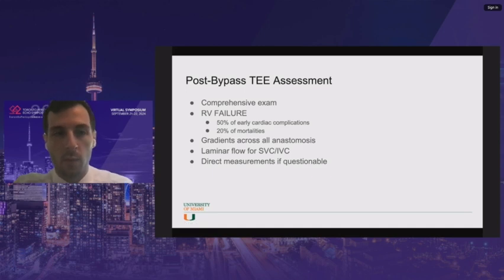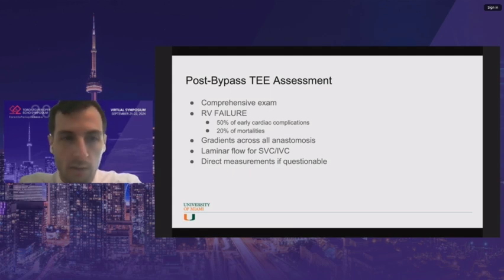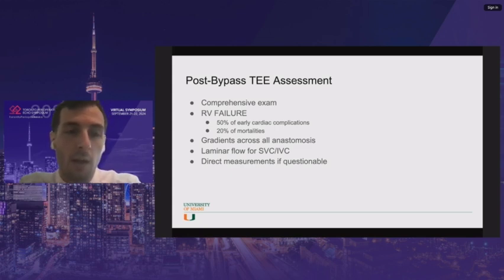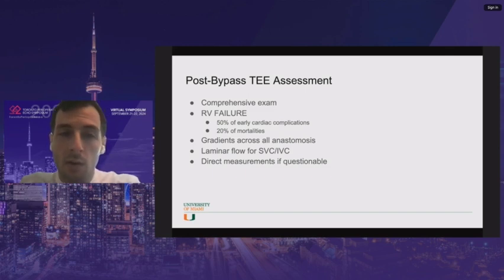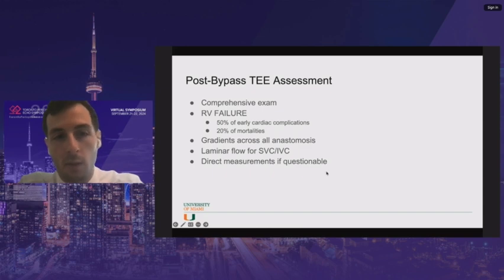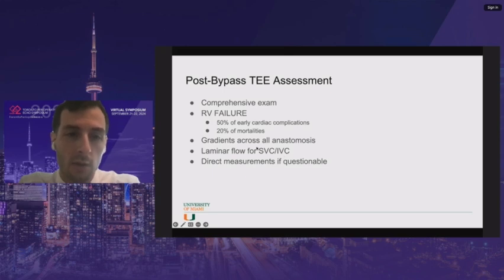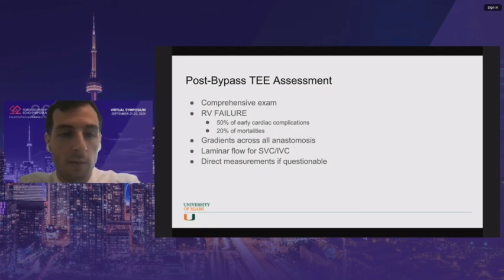Post-bypass is probably the most time-intensive part of the TEE assessment. A comprehensive exam is important, but the most critical complication after heart transplant is definitely RV failure — it accounts for 50% of early cardiac complications and 20% of all heart transplant mortality. We'll also discuss why SVC and IVC gradients are an exception to the gradient rule, and why direct measurement is helpful if stenosis is in question.